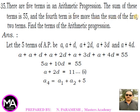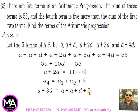Second condition: the fourth term is five more than the sum of the first two terms. a4 = a1 + a2 + 5, so a + 3d = a + (a + d) + 5. After simplification, this gives a minus 2d = minus 5 — call this equation 2.